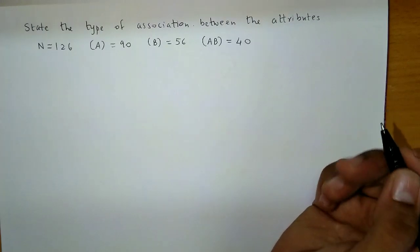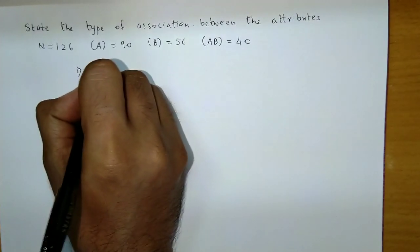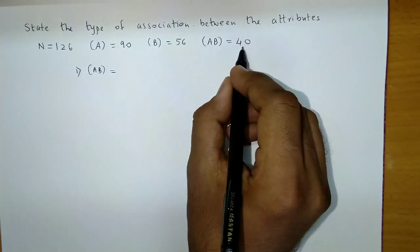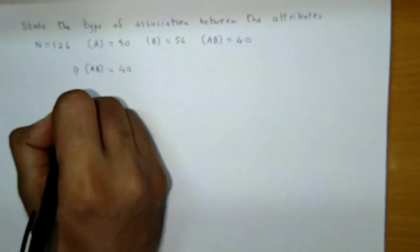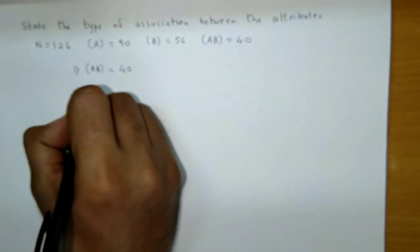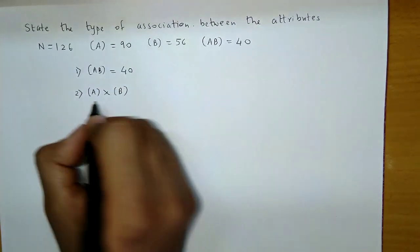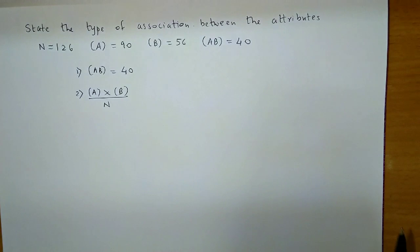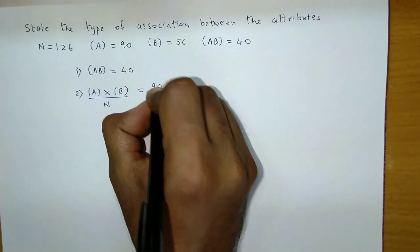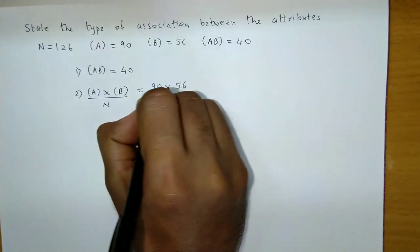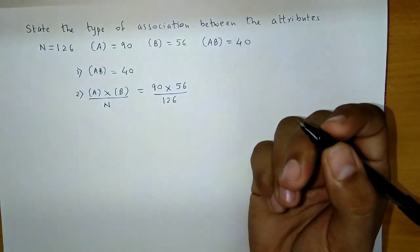Now, in the comparison method, we first make a note of frequency of AB. The frequency of AB is 40, correct? Then, now let's compare it with which? Frequency of A into frequency of B upon N. So, let's substitute: frequency of A is 90, frequency of B is 56, and N value is 126.